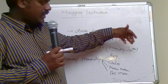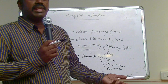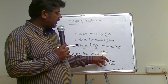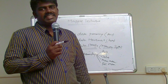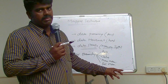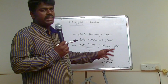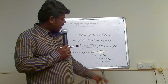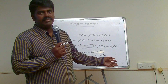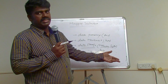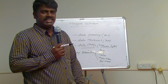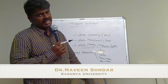The processor first checks the register, then goes to the cache. If the data the processor is searching for is present in the cache, that is called a cache hit. If it is not present in the cache, that is a cache miss, and it will then go and check main memory, and then secondary memory.